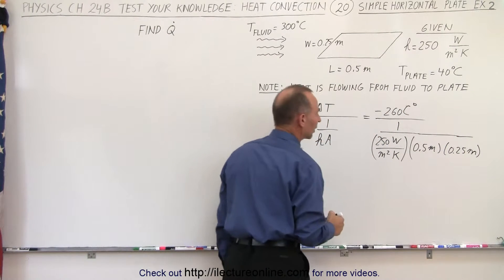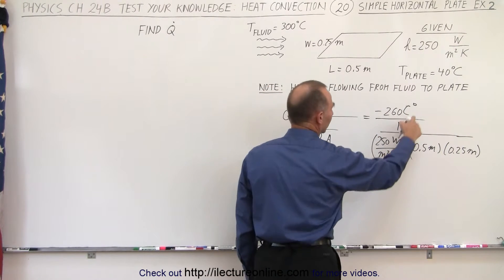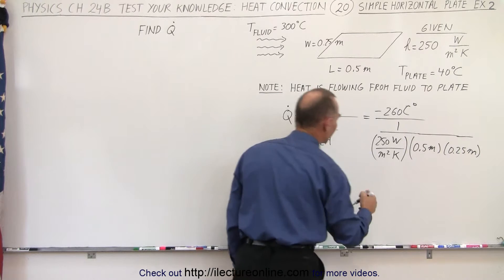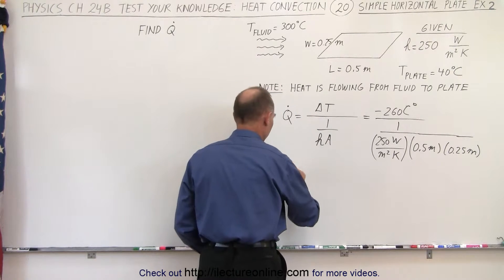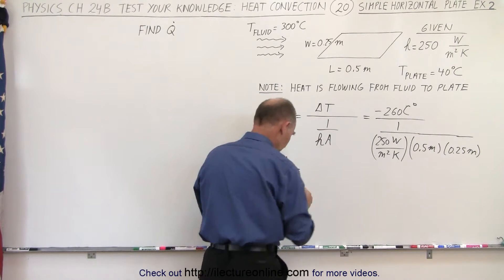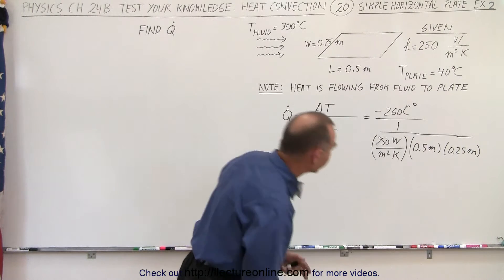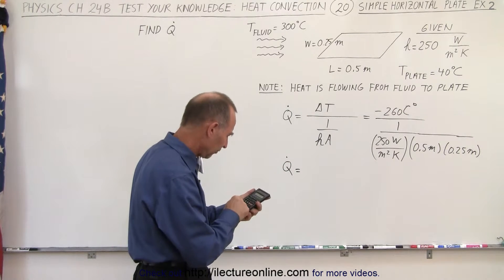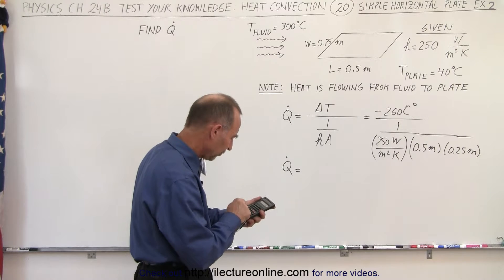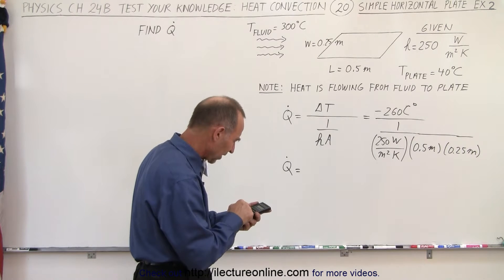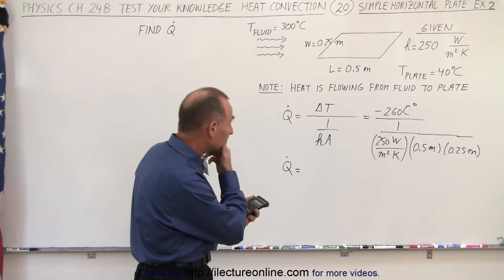So notice the meter squared will cancel out, the Kelvin will cancel out, and we're left with watts once it goes to the numerator. Now Q dot, using a calculator, will be equal to, let's take 250 times 0.5 times 0.25, and then take the inverse of that. Let's see here.